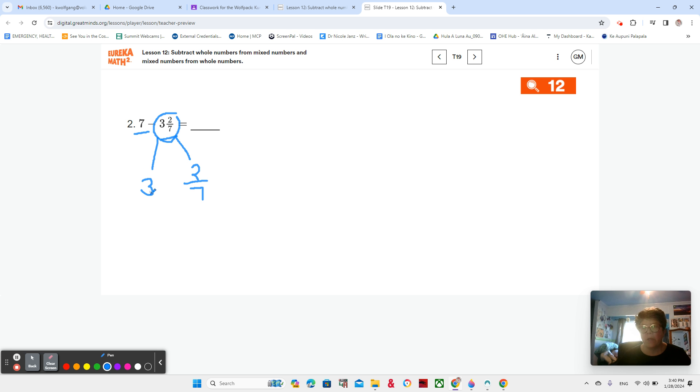I'm going to start with subtracting my whole numbers. 7 minus 3. So let's write that over here so that you have the steps. Subtracting the whole numbers. 7 minus 3 is 4, right?